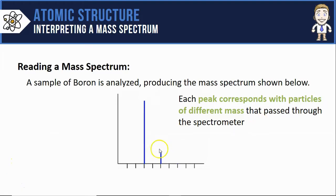So right off the bat with these two separate peaks, I know some of my boron atoms had this certain mass and other boron atoms had a different mass.